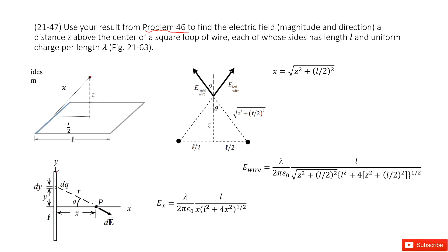In that result, we get the electric field for a wire segment. The wire length is L, and the electric field at point P, which is at distance x from the midpoint of the wire. We found that there is only an x-component in the electric field, as shown in that equation.